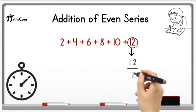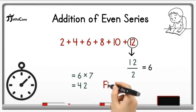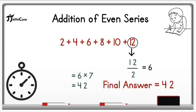So 12 divided by 2 is equal to 6 and now multiply this 6 with its consecutive number 7. So 6 times 7 is 42 and this is your final answer. If you add all these numbers together then you will get answer 42.